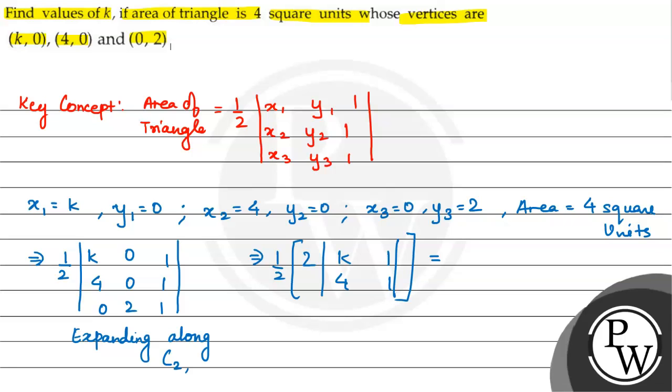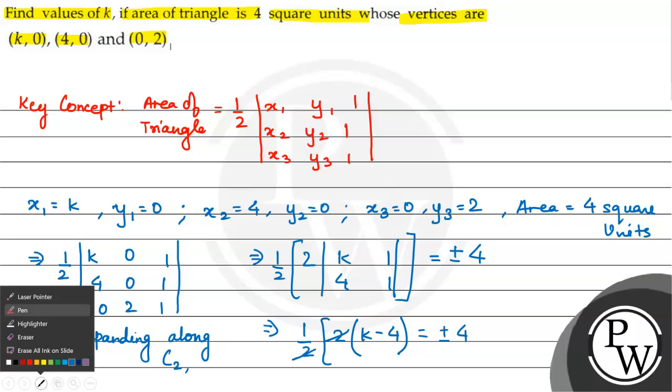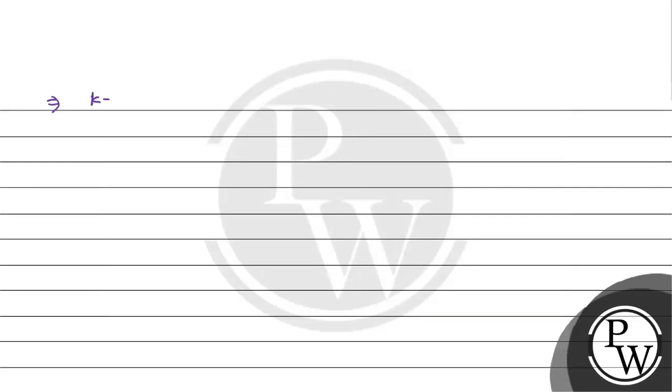Now, 4 square units, it can be either plus or minus. We will give absolute value. So we have to say 2 times k minus 4 is equal to plus minus 4 right. This implies that k minus 4 is equal to plus minus 4.